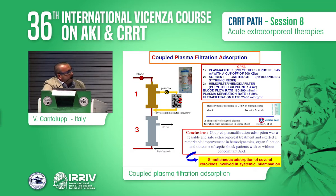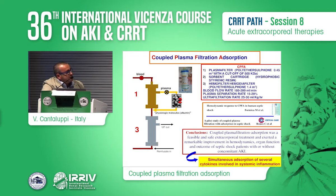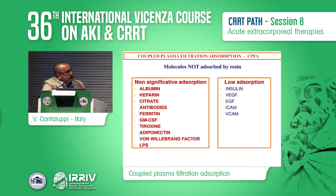This is how CPFA works: the first filter is a plasma filter, the second filter is the sorbent cartridge, and then the conventional RRT. We have specific blood flow rates, plasma separation rate, and ultrafiltration rate as the operational characteristics. From different in vitro, experimental, and clinical studies, CPFA is able to absorb several mediators involved in the inflammatory response syndrome — in particular, the resin can absorb different cytokines, interleukins, chemokines, and also LPS-binding protein. However, the resin cannot absorb some other mediators, in particular LPS, albumin, heparin, and there is low absorption for other growth factors and inflammatory mediators.